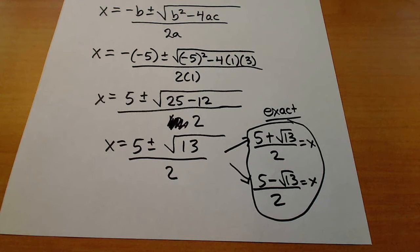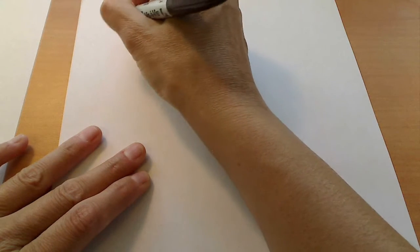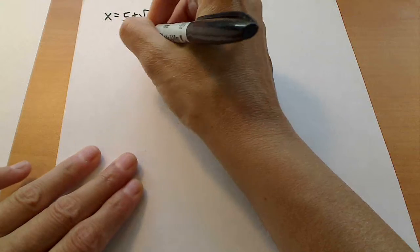So let's go ahead and plug those in to our calculator and see what we get here. So our first solution, 5 plus square root of 13 over 2.